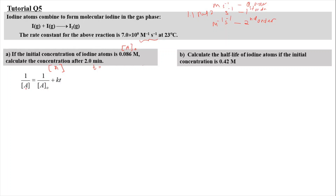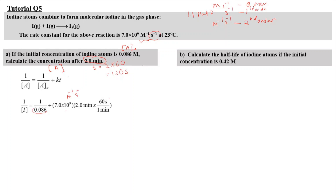We need to find A. A0 is 0.086 molar, K is 7 times 10 to the power of 9 per molar per second, and time is 2 minutes, which we convert to 120 seconds so units cancel. Substituting: 1/[I] equals 1/A0 plus K times T. Once we do the math, the concentration of iodine after 2 minutes is 1.19 times 10 to the power of negative 12 molar.